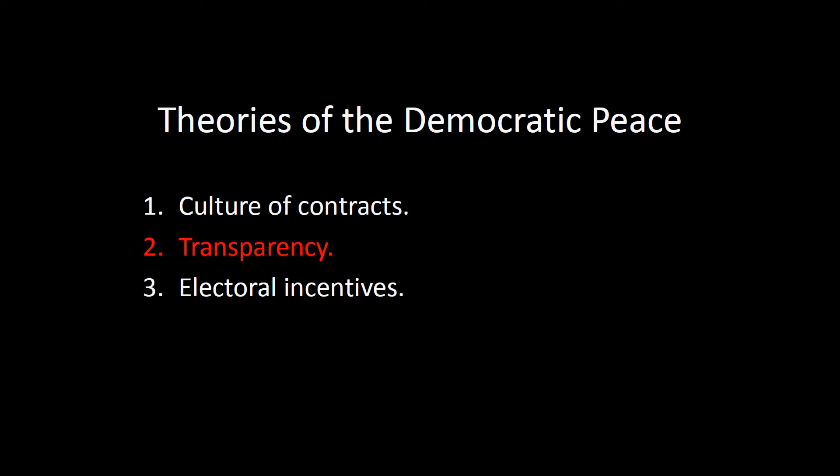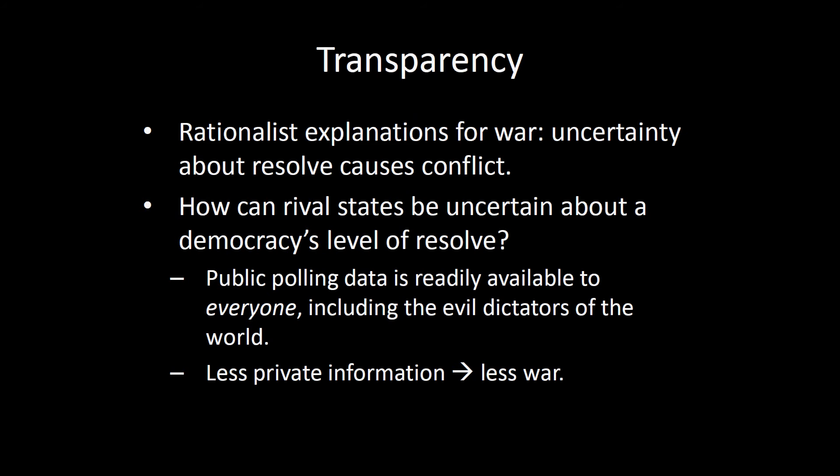Moving on, the transparency argument works like this. Recall from the unit on rationalist explanations for war that uncertainty about resolve causes conflict. If I suspect you don't care much about the issues at hand, my optimal offer will demand a lot from you. If it turns out you actually do care a lot, you'll reject my offer and we fight a war. That's uncertainty about resolve causing conflict — something important from earlier in the course. Now, it's going to be more difficult for a state to be uncertain about a democracy's level of resolve.